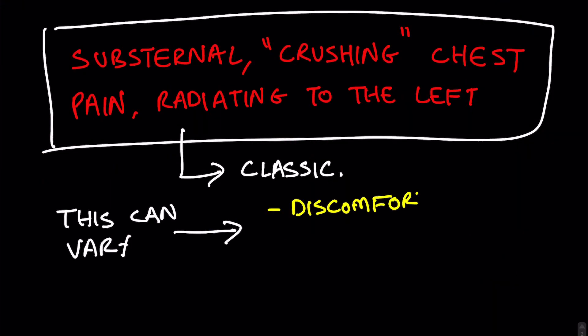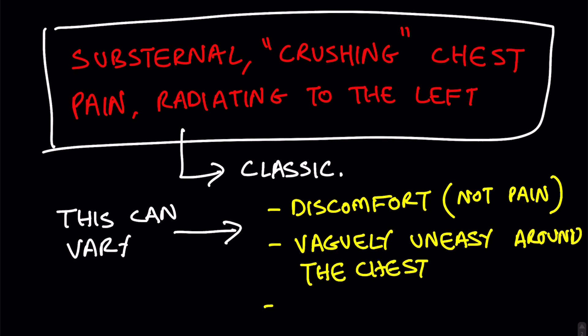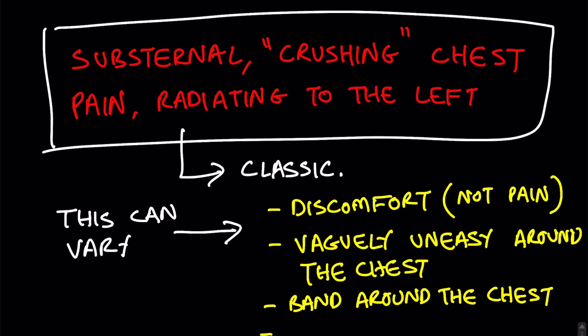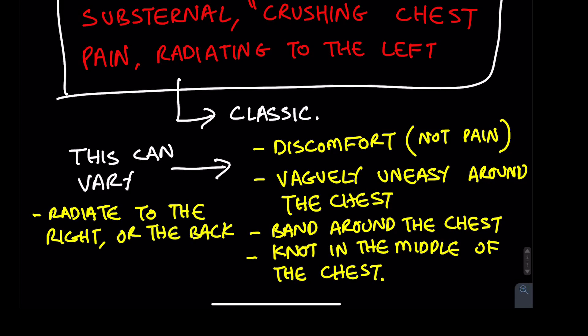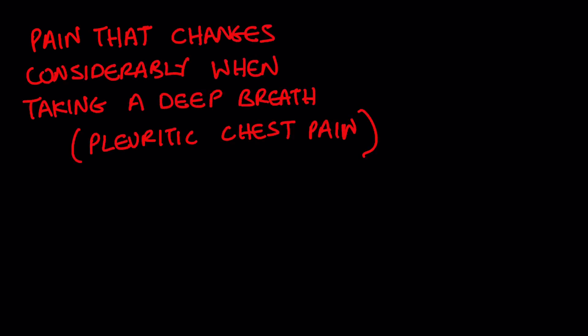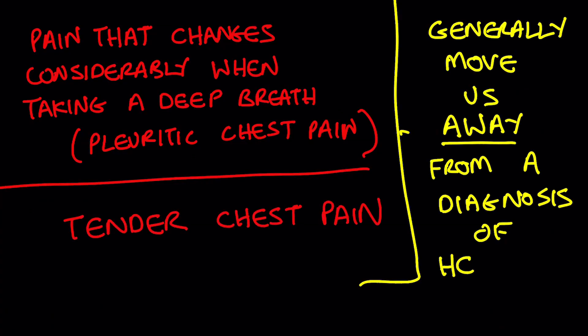The pain may present as more of a discomfort, not an actual pain. Sometimes it's difficult to characterize properly and the patient will just say they feel vaguely uneasy around the chest. Other descriptions include a sense of a band wrapping around the chest or a sensation of a knot in the middle of the chest. It may not radiate at all, or if it does, it will radiate to the right or towards the back. We also typically ask patients how the pain changes when taking a deep breath in — pain that worsens considerably with a deep breath is called pleuritic chest pain, and generally that is not caused by the heart but usually by the lungs. We also ask if the chest is tender when pressed; if so, that too is usually not associated with angina. So pleuritic chest pain and tenderness generally move us away from a diagnosis of angina and heart attack.